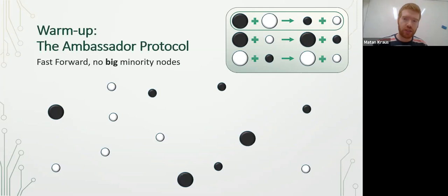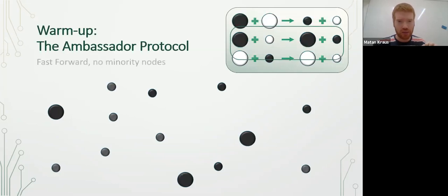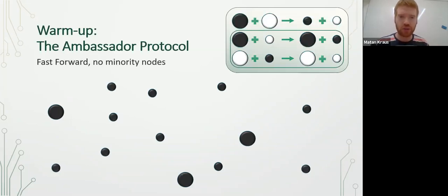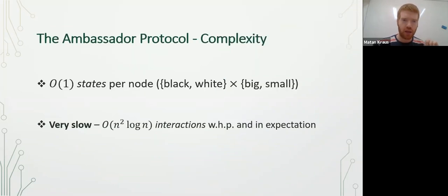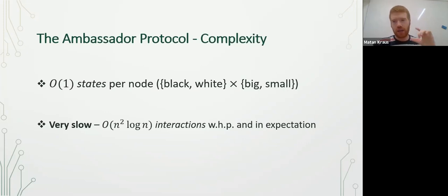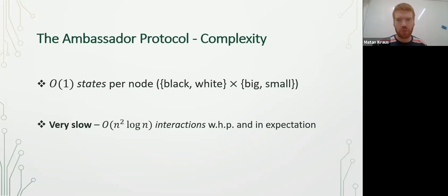That at least one majority big node will eventually color all the minority small nodes in the majority color. So in this case, the big majority nodes left in the population color all the small nodes black. The complexity of the ambassador protocol is O(1) states per node, which is a Cartesian product of the number of colors and the number of sizes. However, this is a very slow protocol — only O(n² log n) interactions with high probability and expectation.